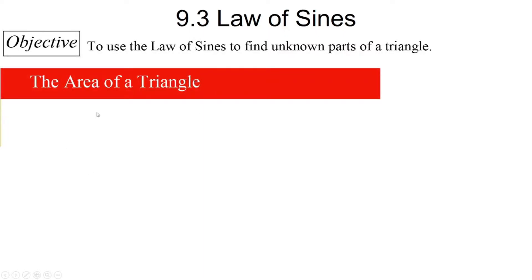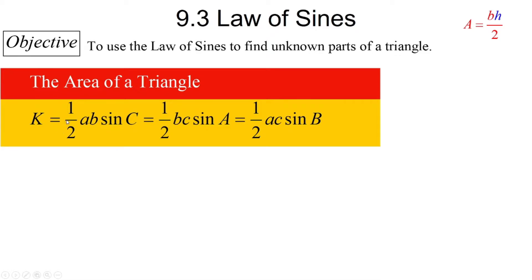To develop the Law of Sines, we use the area of a triangle. You always think of area as base times height divided by two, but remember in pre-algebra when your teacher gave you a triangle and you had to find the height before you could find the area? Well, with trigonometry I found another formula: K equals one-half a·b·sine(C), and that equals one-half b·c·sine(A), and also one-half a·c·sine(B).